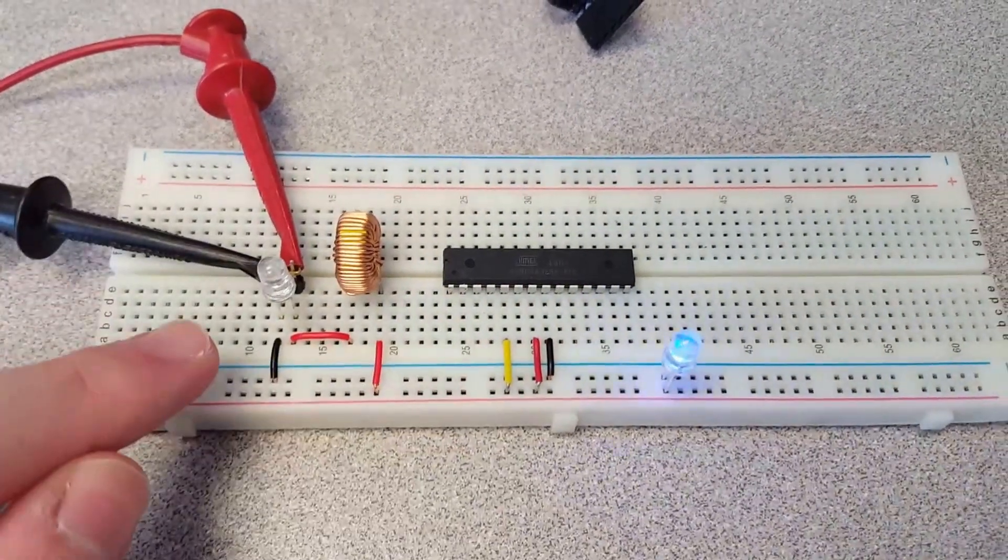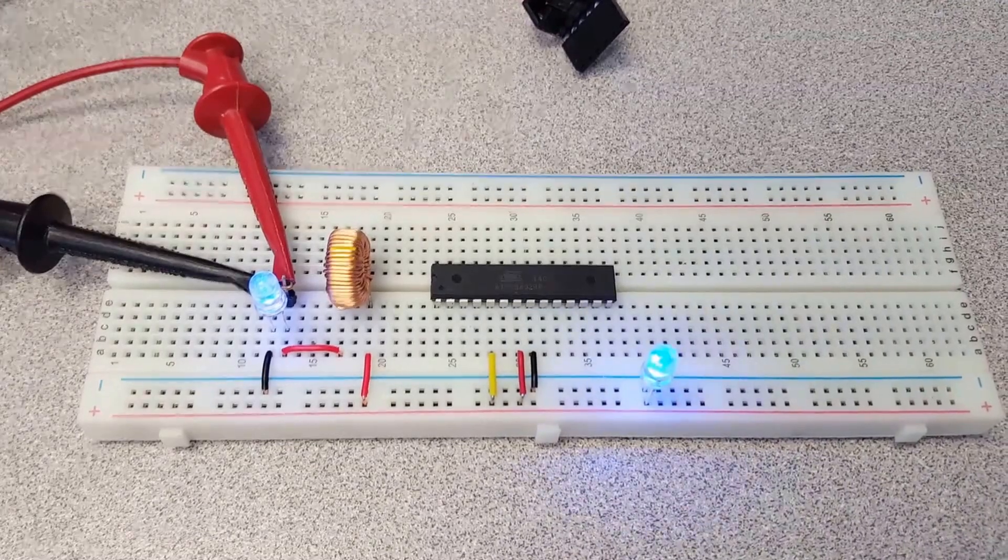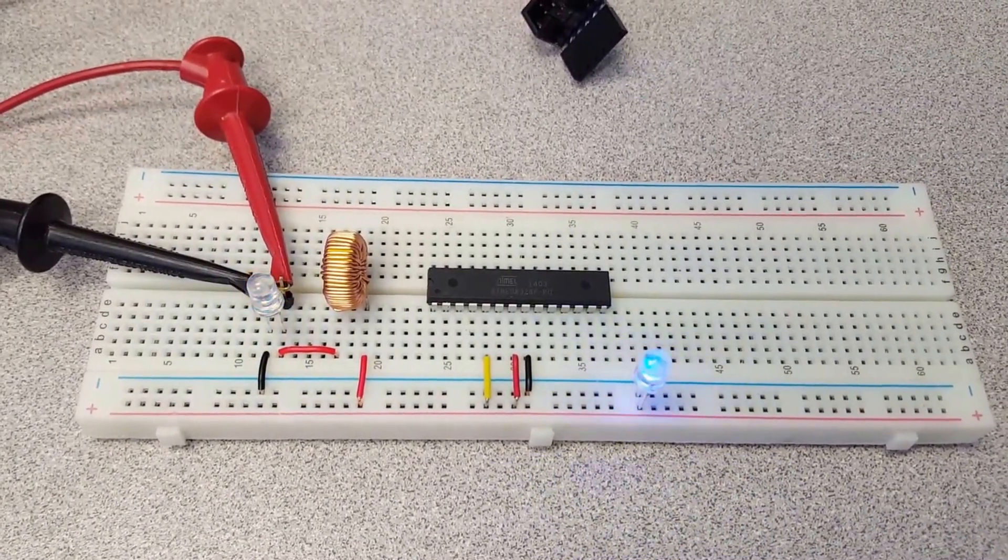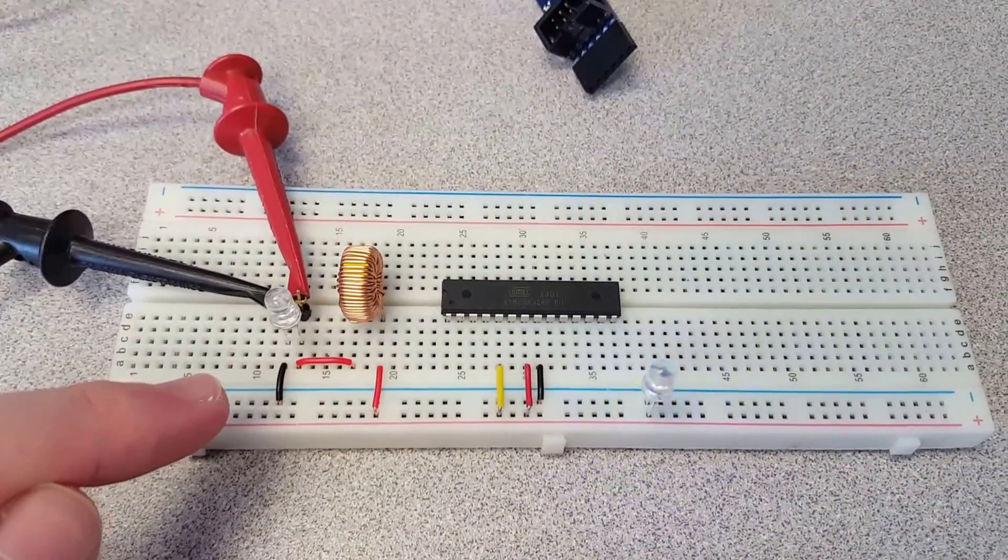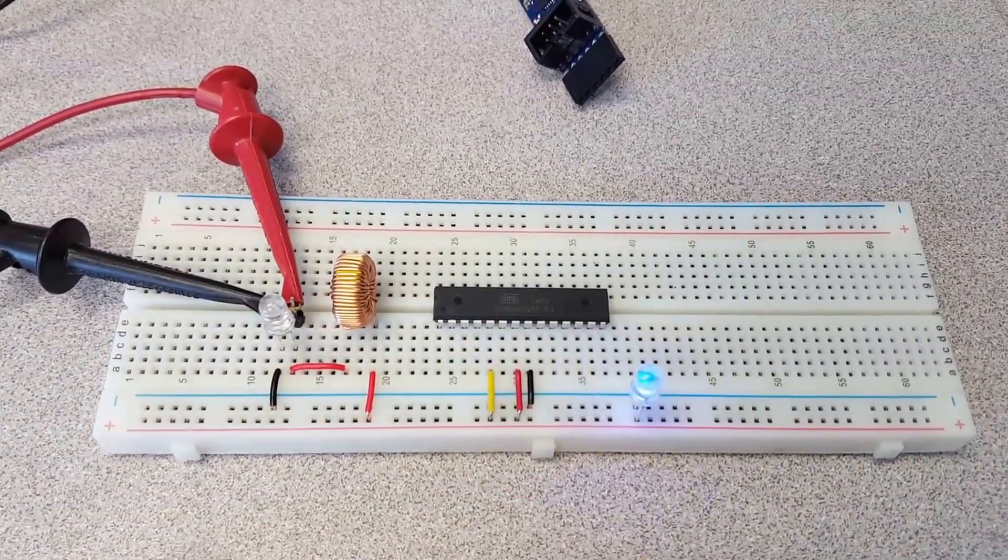Now just to prove that I plugged this LED in correctly, I'm going to increase the voltage up to 2.6 volts. You can see that the LED is on. When I turn the voltage back down to 2.3 volts, there's not enough voltage to turn that LED on, but because we have a boost happening, we're able to power that LED.